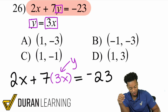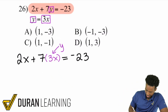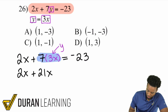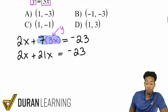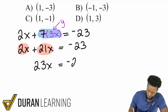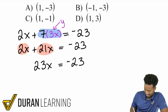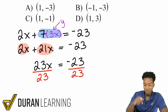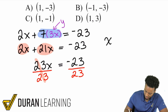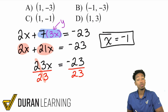Now let's get this done. I'll distribute: 7 times 3X is 21X. So we have 2X plus 21X equals negative 23. Combining like terms gives us 23X equals negative 23. Dividing both sides by 23, the 23s cancel out, giving us X equals negative 1.